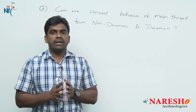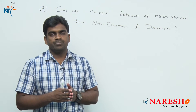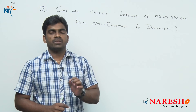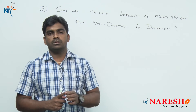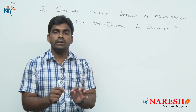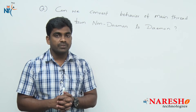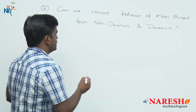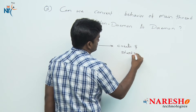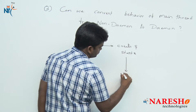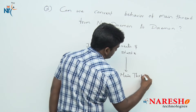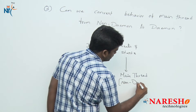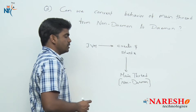The question is whether the main thread is non-daemon and can we convert that non-daemon behavior to daemon. Every thread behaves like a non-daemon thread as soon as it is created, including the main thread. The JVM creates and starts the main thread. By default, the main thread is non-daemon, and in fact every thread is non-daemon by default.